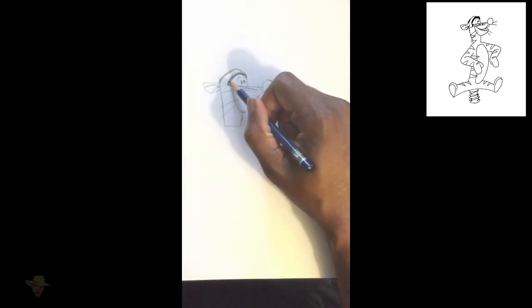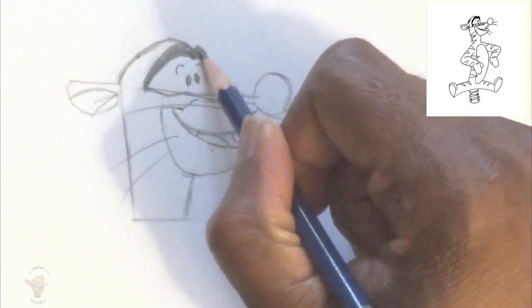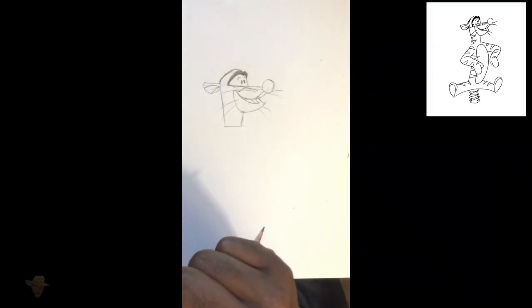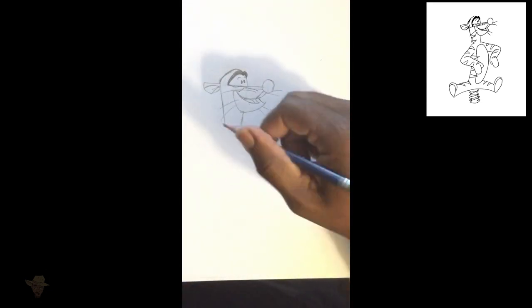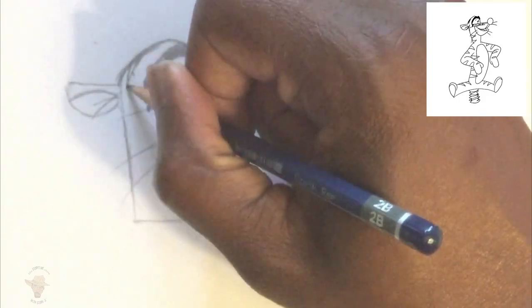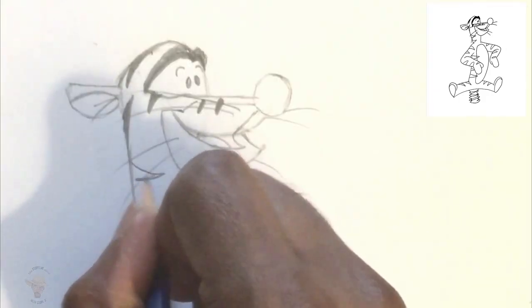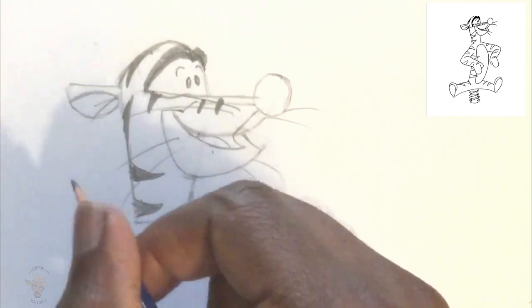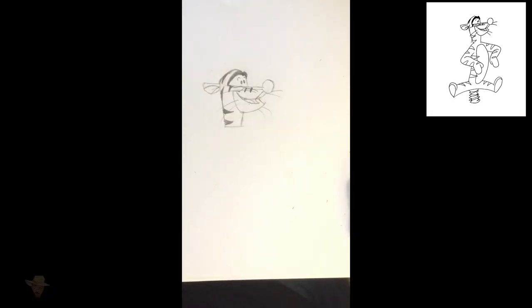But still not quite looking like him. Maybe it's his brow. Maybe I need to give a little more oomph to it. Looking better. But what is he missing? Stripes, exactly. Now that is the Tigger I know.